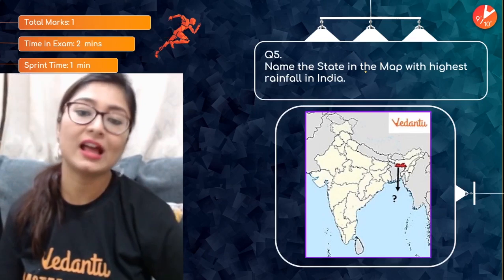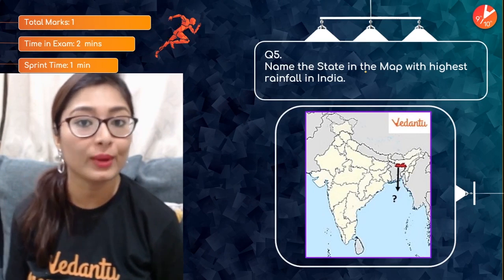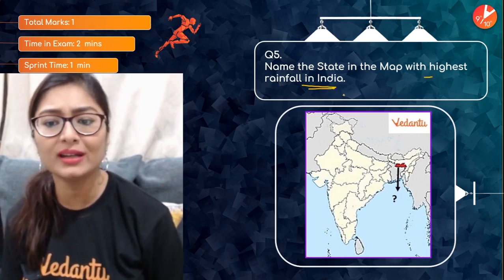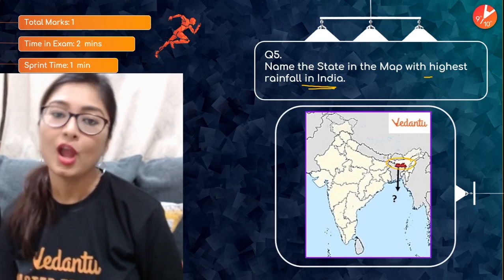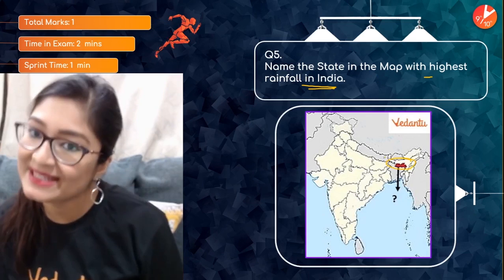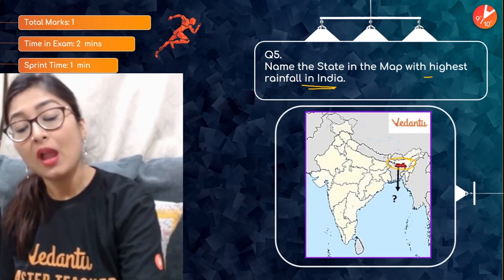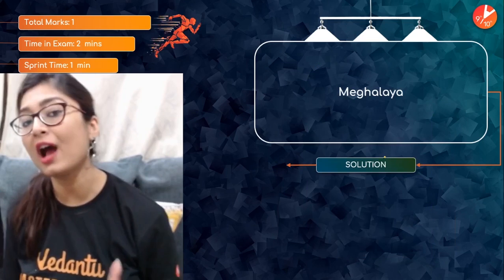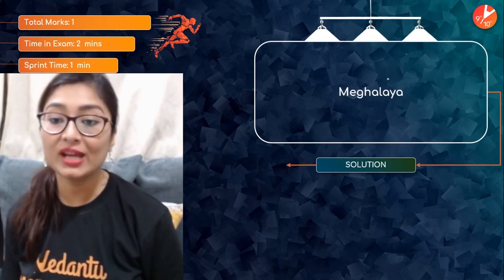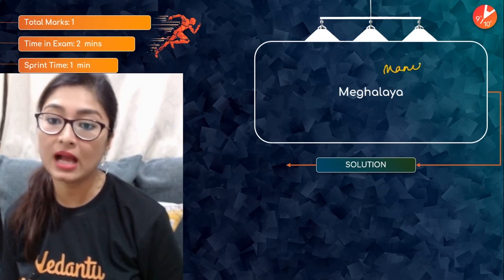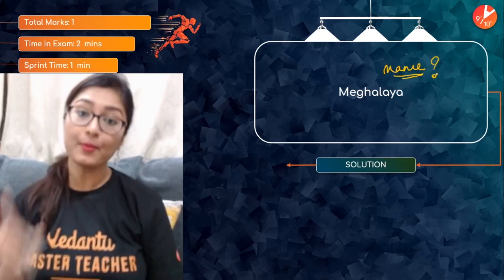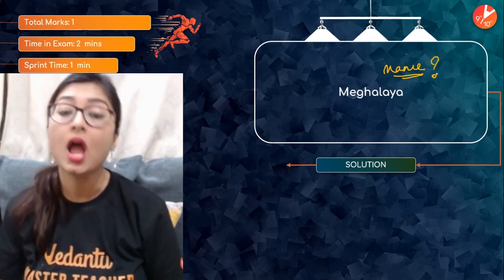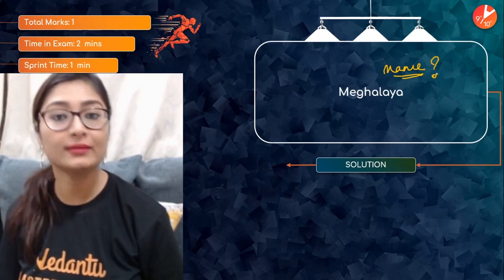Question 5 is also a one-marker: name the state on the map with the highest rainfall in India. The answer is Meghalaya — it receives more than 1000 cm of rainfall. You have to identify and name this location on the map. Meghalaya also contains the place with the highest rainfall in the world.